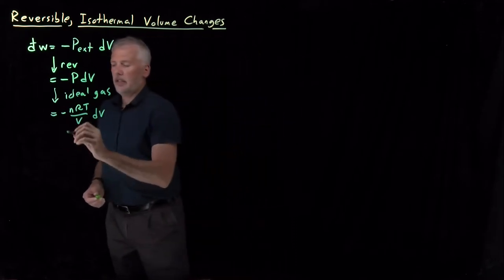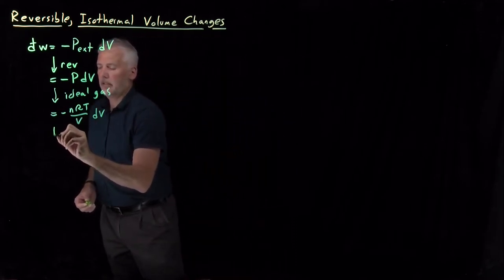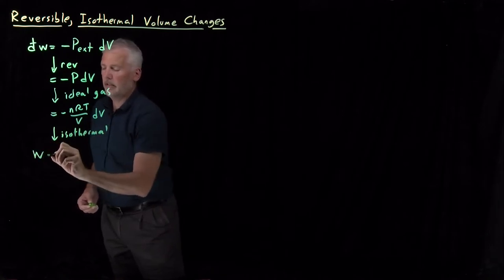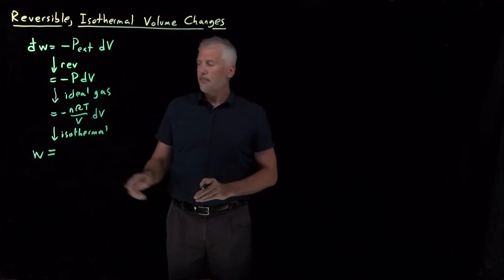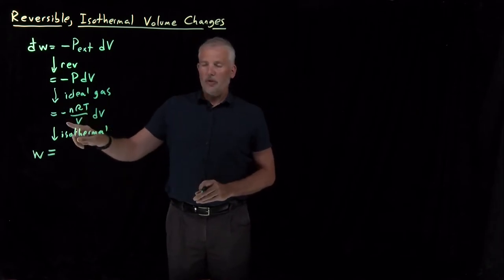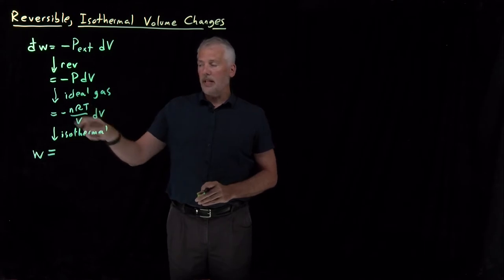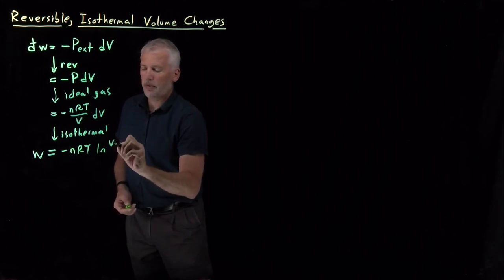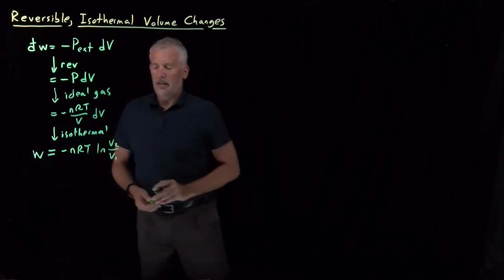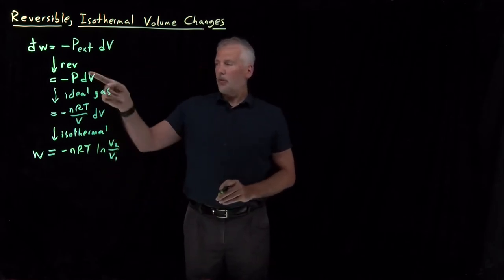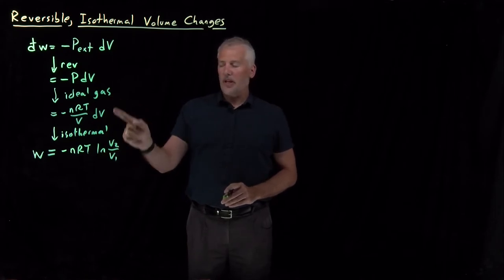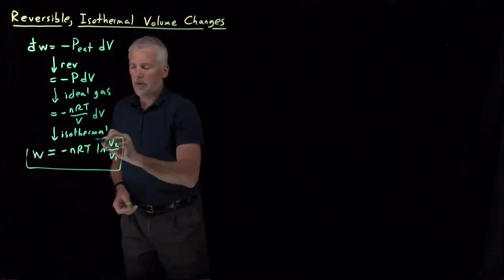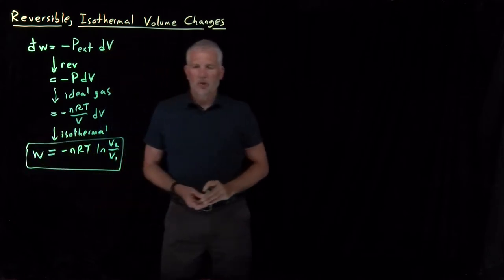When we integrate dW to get W, sticking an integral sign in front, if it's an isothermal process then T can be pulled out of the integral. The result we've seen before is that the work for a reversible isothermal volume change for an ideal gas is minus nRT log(V2/V1). We'll box that equation and spend a little more time thinking about it.